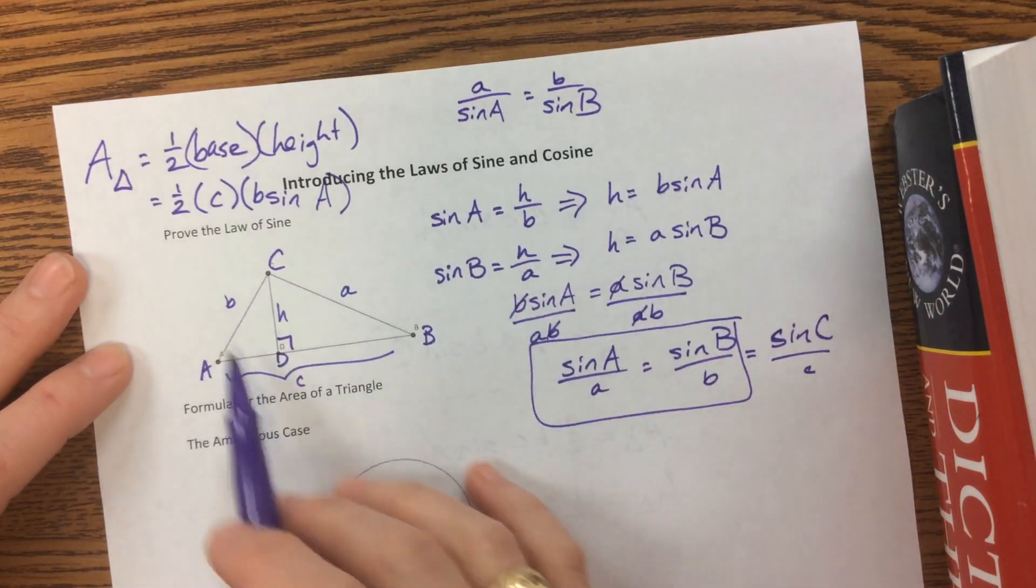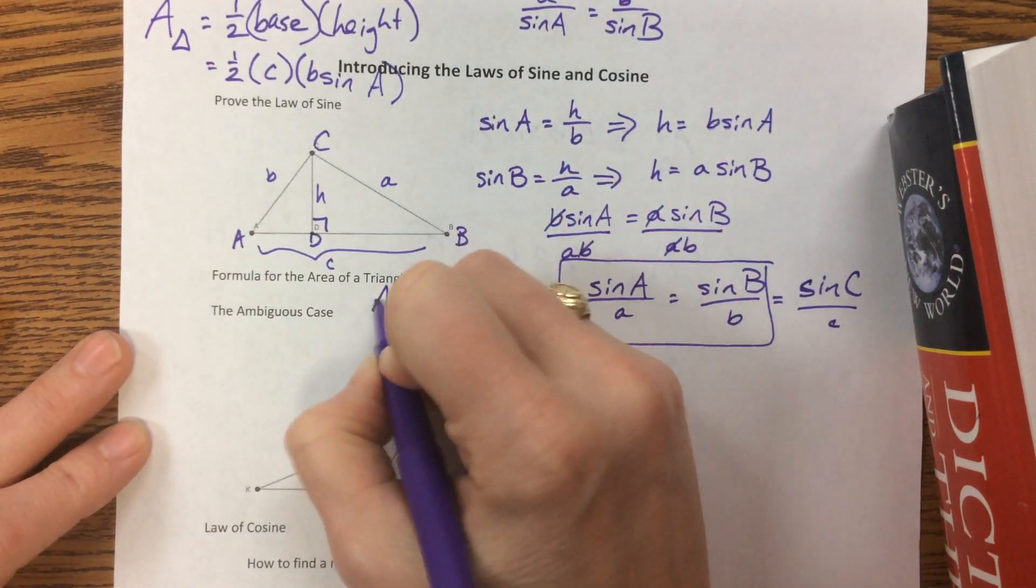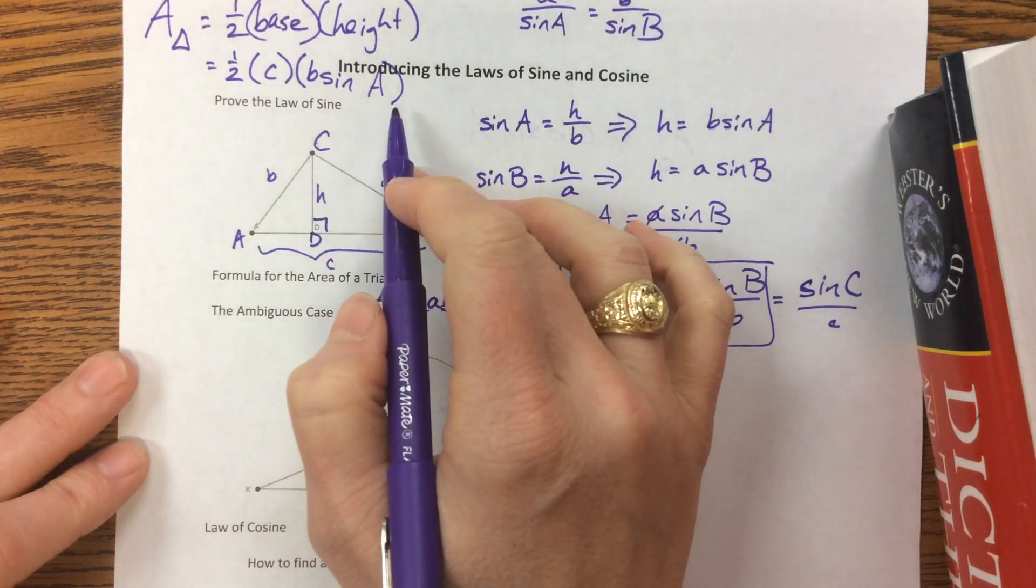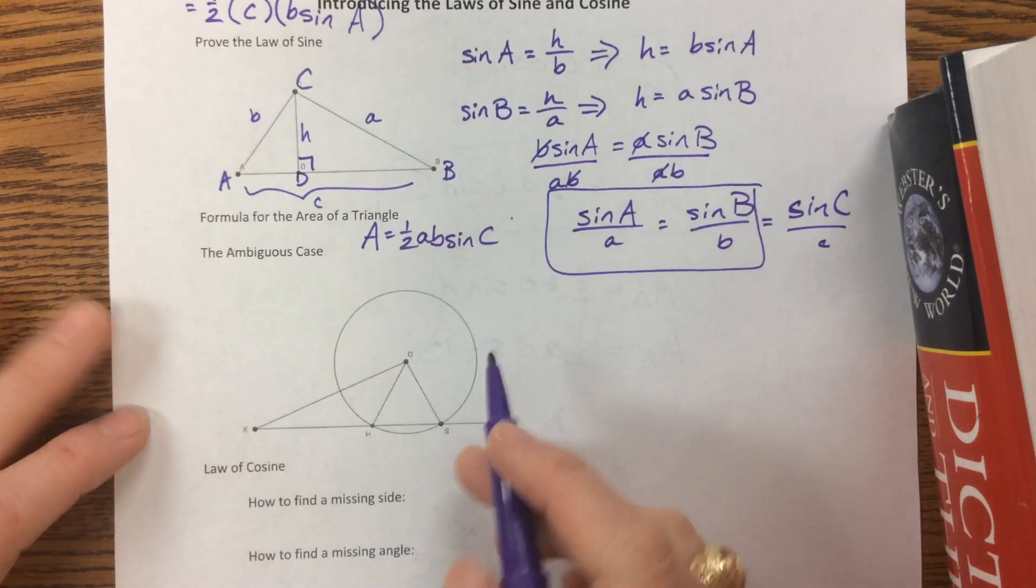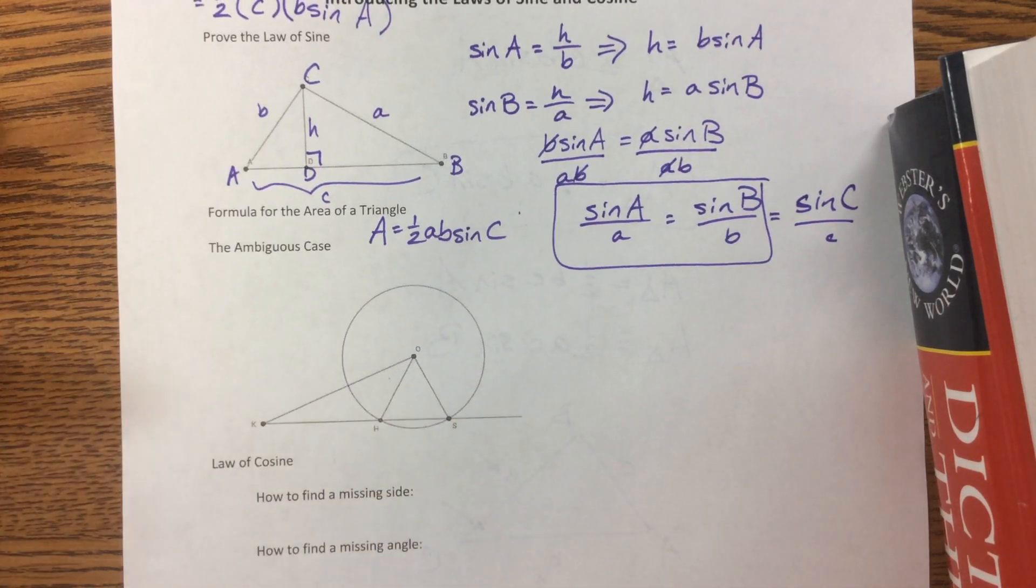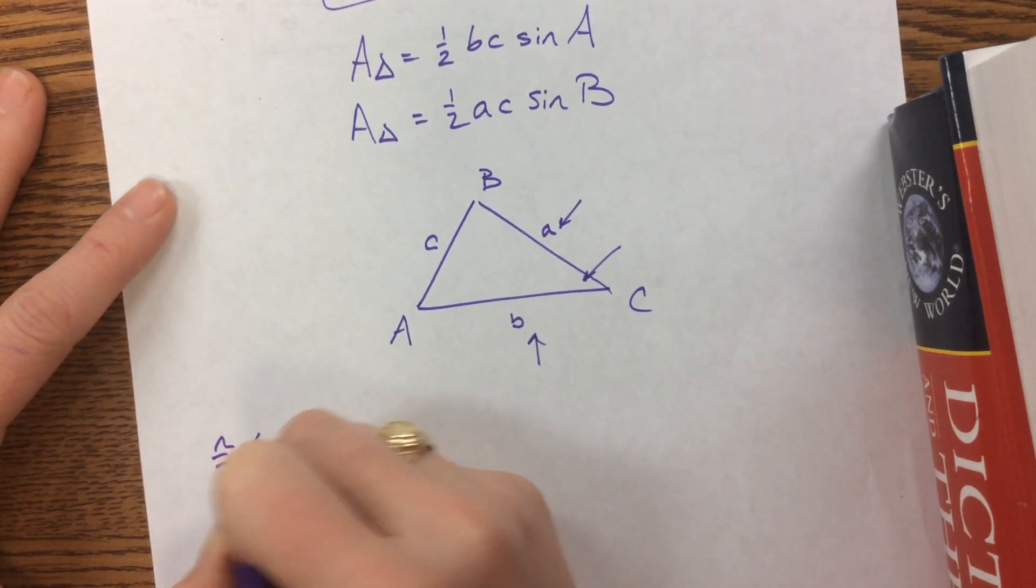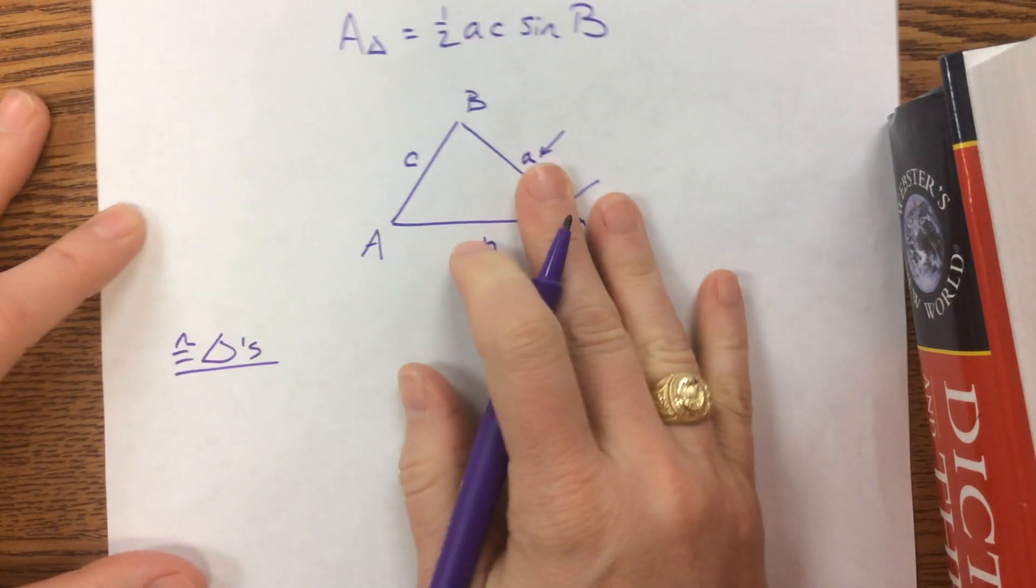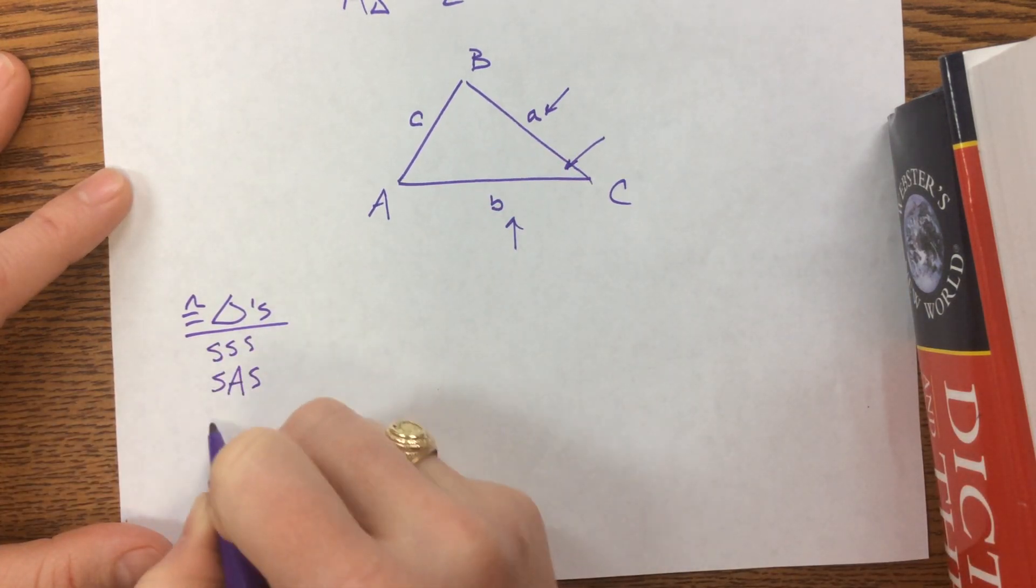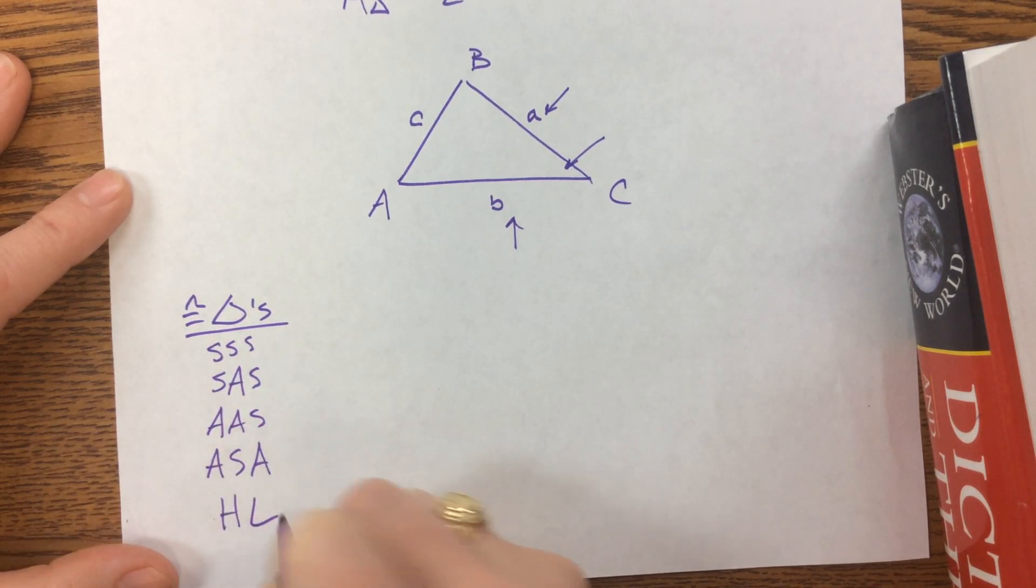So that's the introduction so far for the law of sine. Now what I want to talk about is what we call the ambiguous case. Now you might remember from geometry, hopefully you do, that we have congruent triangles, we have different rules that let us have congruent triangles. We have side, side, side, we have side, angle, side, we have angle, angle, side, we have angle, side, angle, and we also have hypotenuse leg.